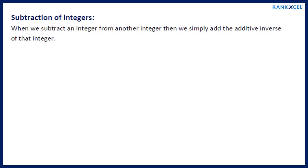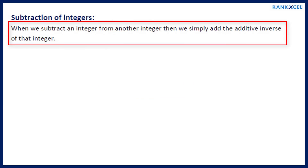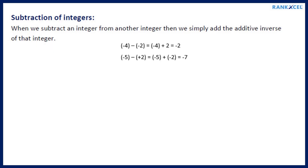Subtraction of Integers: When we subtract an integer from another integer, we simply add the additive inverse of that integer. Example: minus 4 minus minus 2 equals minus 4 plus 2 equals minus 2.